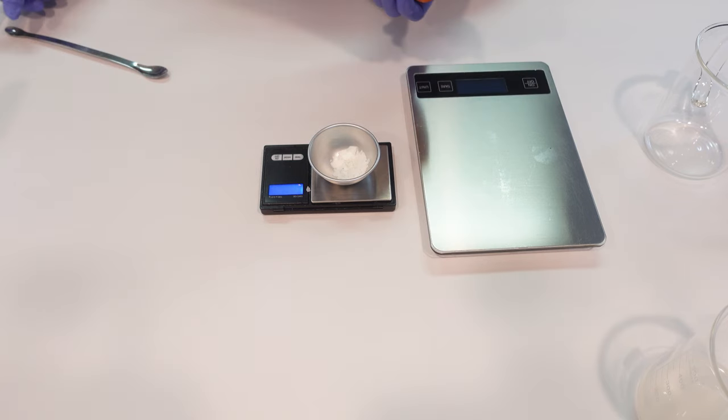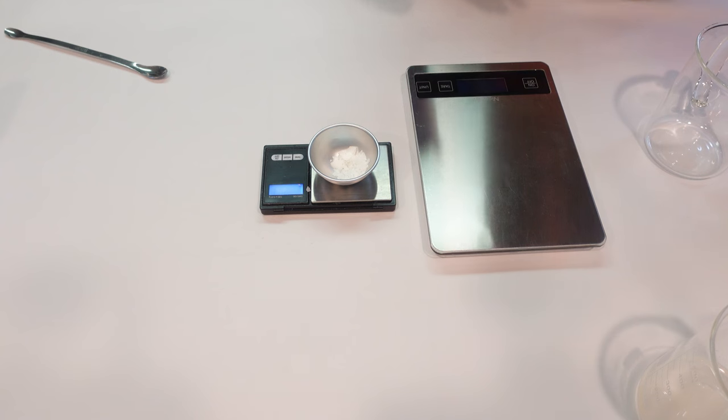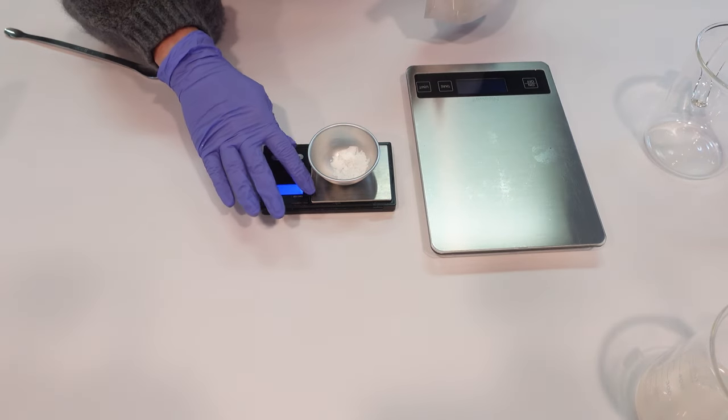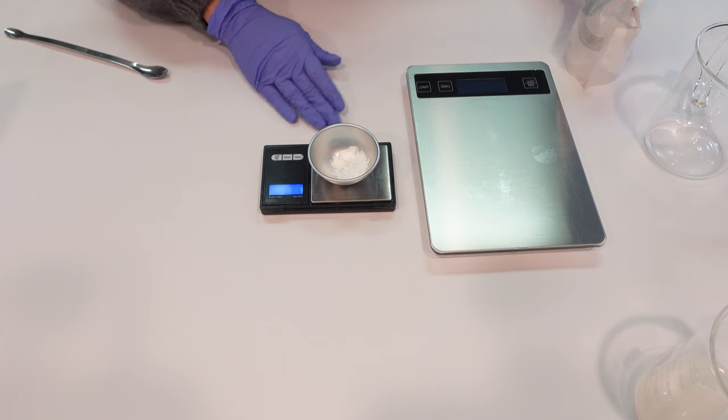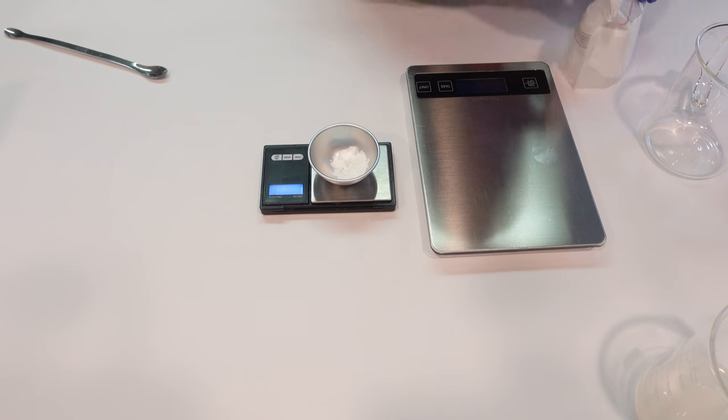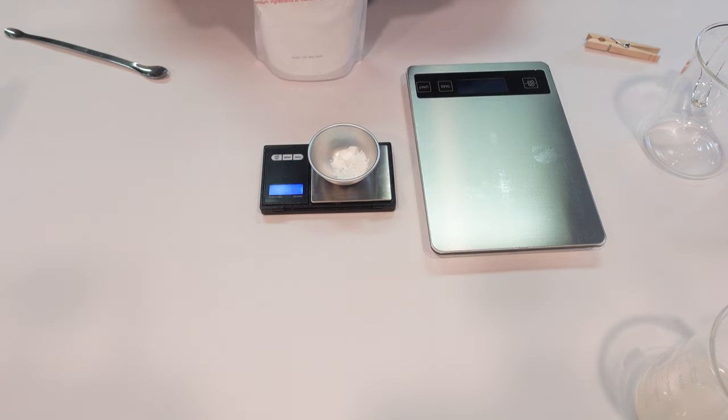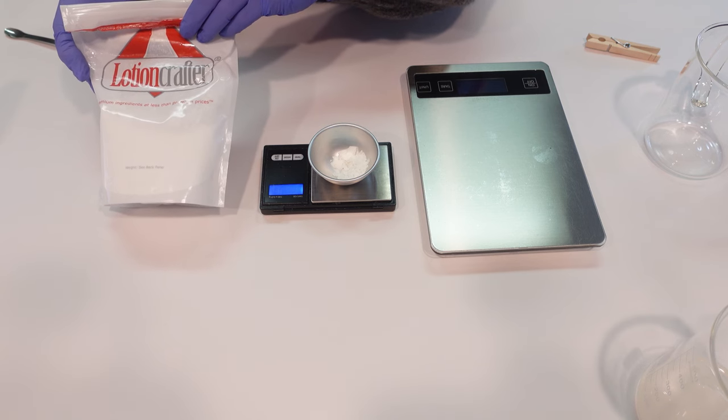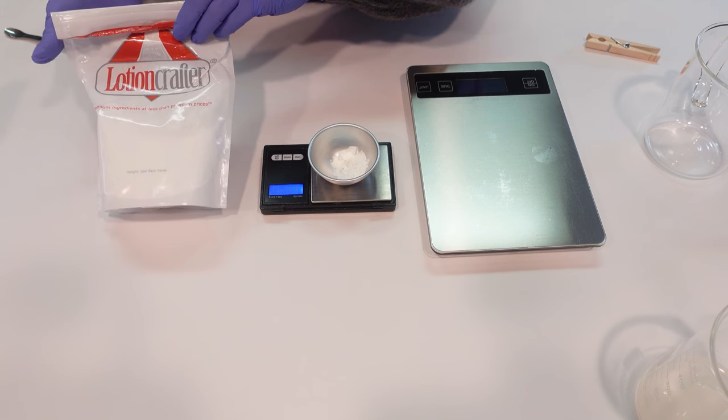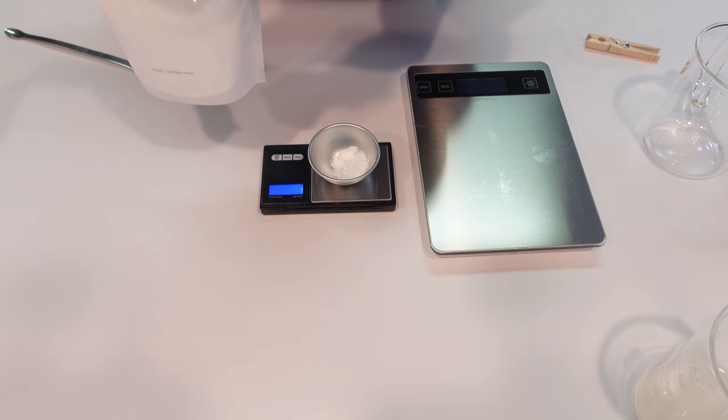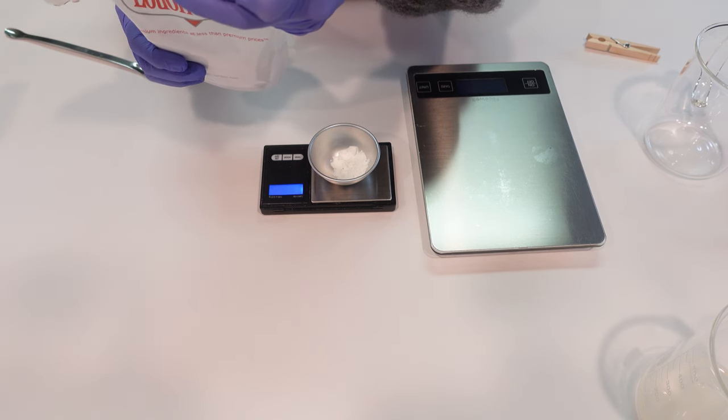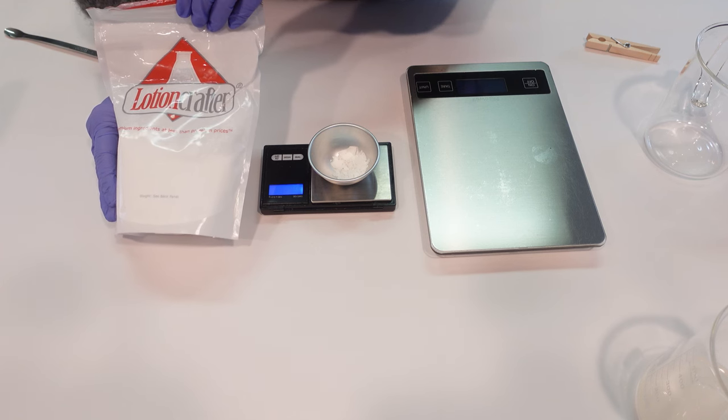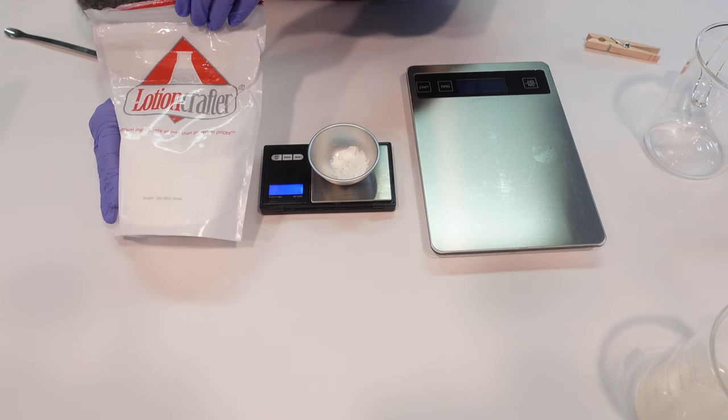Next up we're adding a gel maker. I told you in the intro this cream is going to be kind of a gel type cream with a very beautiful end texture. This is our gel maker, called Sepimax Zen, and the INCI is polyacrylate crosspolymer-6. This is going to create a little bit of a gel or bouncy feeling and it also gives the formula a really velvety skin feel. You're really going to like this.